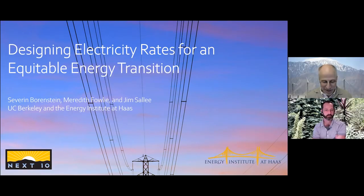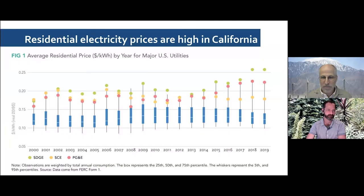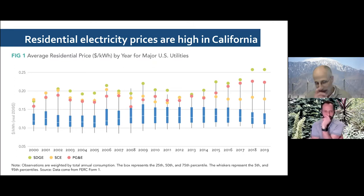Thank you. It's lovely to be at Monash again — I was there 35 years ago. This paper starts from the recognition that prices in California are high and actually once again rising. They had come closer to the national average but in the last few years have started really rising again. We're looking into why that is and what the implications of it are.